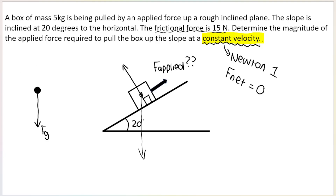A really good tip: draw the slope in pencil so you can erase it afterwards. You can see Fg goes straight down — please use a ruler, I'm not using one because this drawing tool doesn't allow me to, but you will use a ruler. The normal force acts at 90 degrees or perpendicular to the surface.